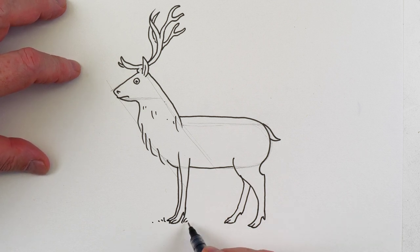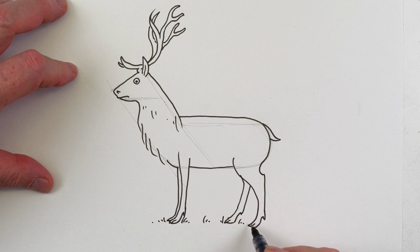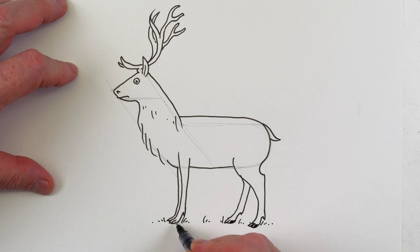And then we can do some little bits of grass for it to be standing on something because otherwise it looks like it's a little bit kind of left hanging in the air.